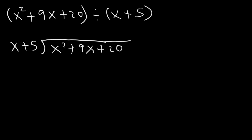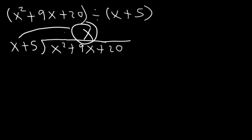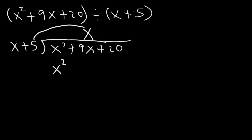In long division we're going to divide, then multiply, then subtract. First we're going to divide x squared by x, and that's going to give us x, which we can place up here. Next we're going to multiply — we take x and multiply it by x and 5. So x times x is x squared, and then x times 5 is 5x.